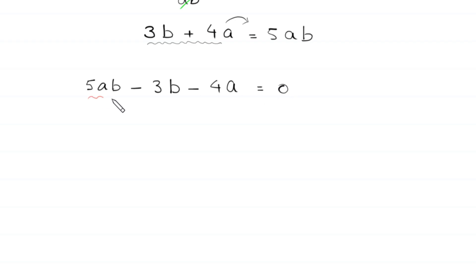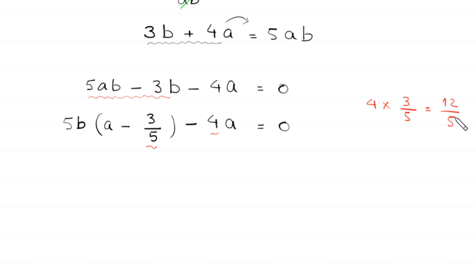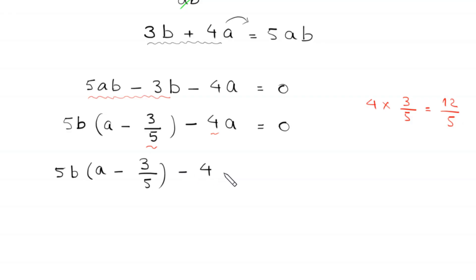From the terms 5ab minus 3b, we factor out b, leaving a minus 3 over 5, minus 4a equal to 0. If we multiply 4 by 3 over 5, we get 12 over 5. So we add 12 over 5 to both sides, giving us 5b times (a minus 3 over 5) minus 4a plus 12 over 5 equal to 12 over 5.